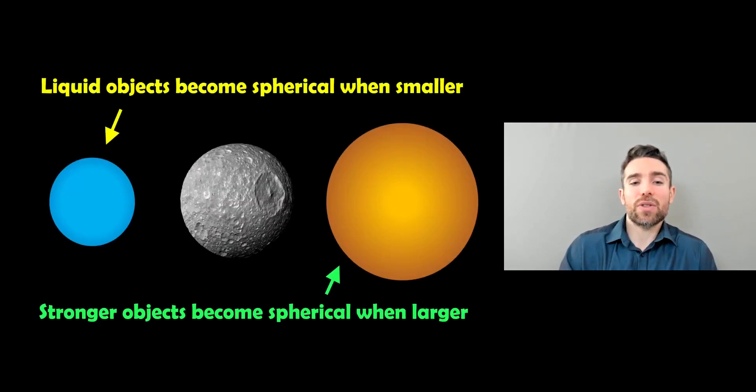But if it's made of something else, so if it was a purely liquid object which would be easier to mold into a spherical shape, then you'd likely expect it to be smaller. So it becomes spherical at a smaller size. If it was a much stronger material, stronger object, you'd expect it to become spherical when larger so it could hold out longer until it started to be molded into a spherical shape.